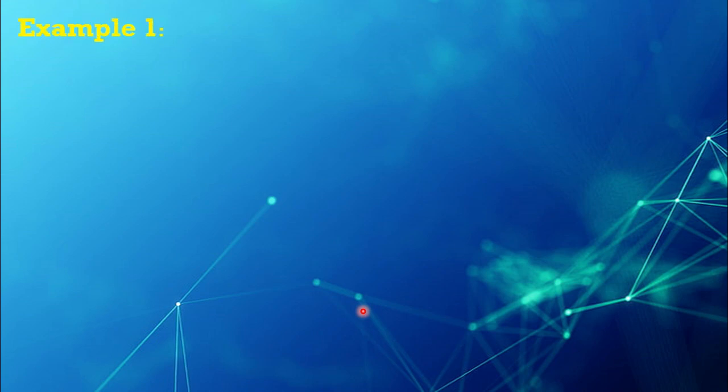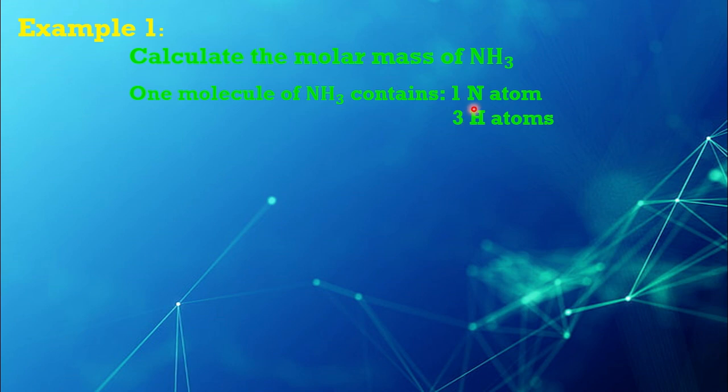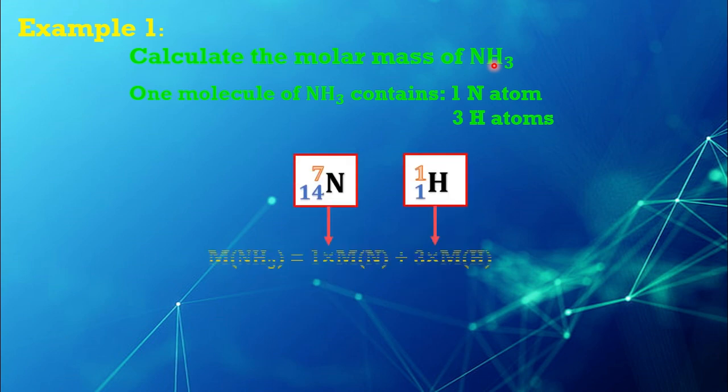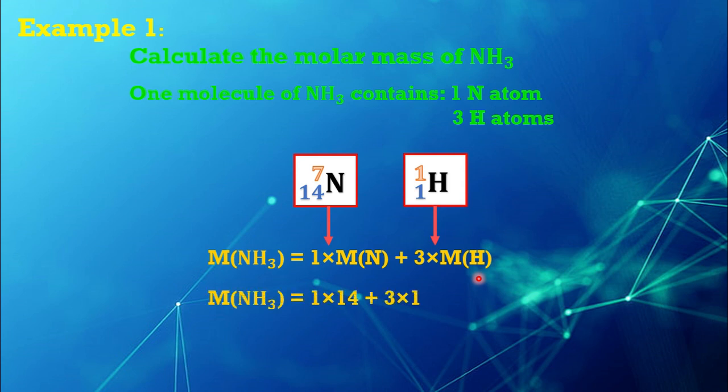For example, let's consider how to calculate molar mass of ammonia. As we know, one molecule of ammonia contains one nitrogen atom and three hydrogen atoms. So, the molar mass of ammonia equals 1 multiplied by atomic mass of nitrogen plus 3 multiplied by atomic mass of hydrogen. By using the periodic table, the atomic mass of nitrogen is 14 and the atomic mass of hydrogen is 1. So, the molar mass of ammonia is 17 grams per mole.